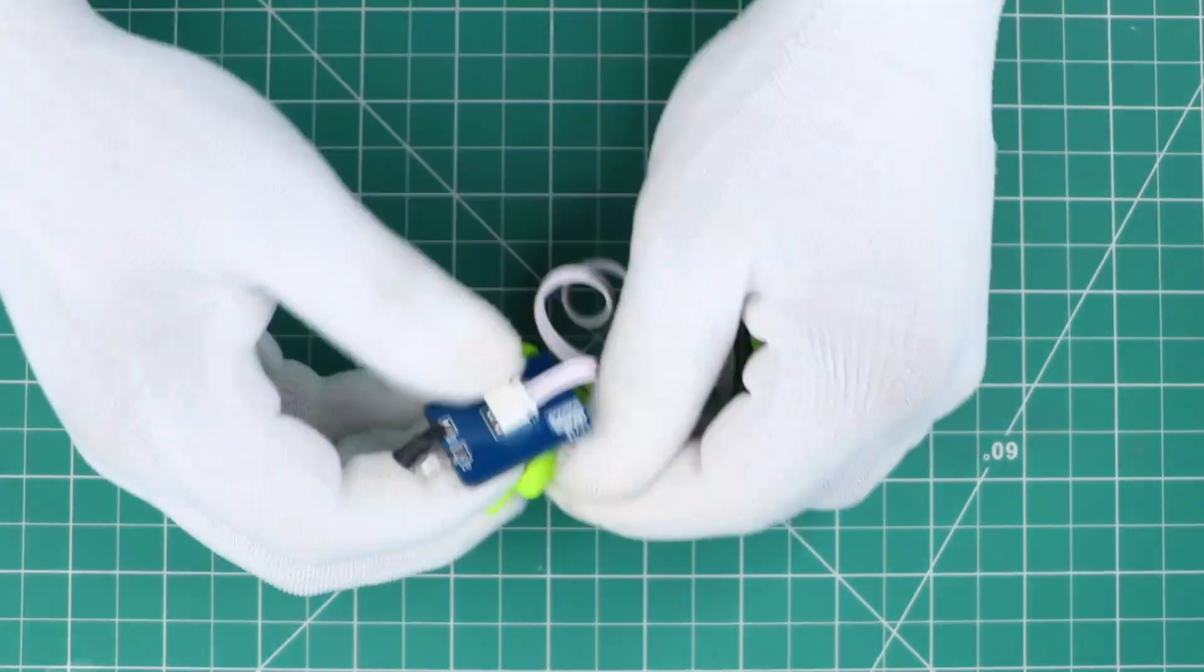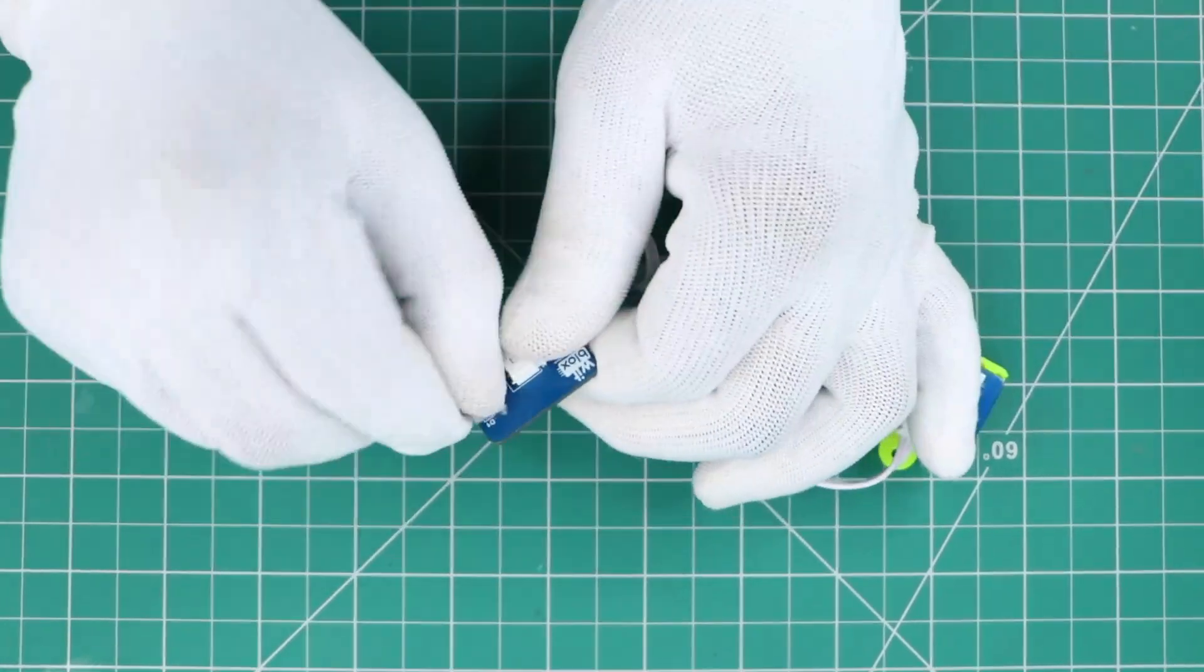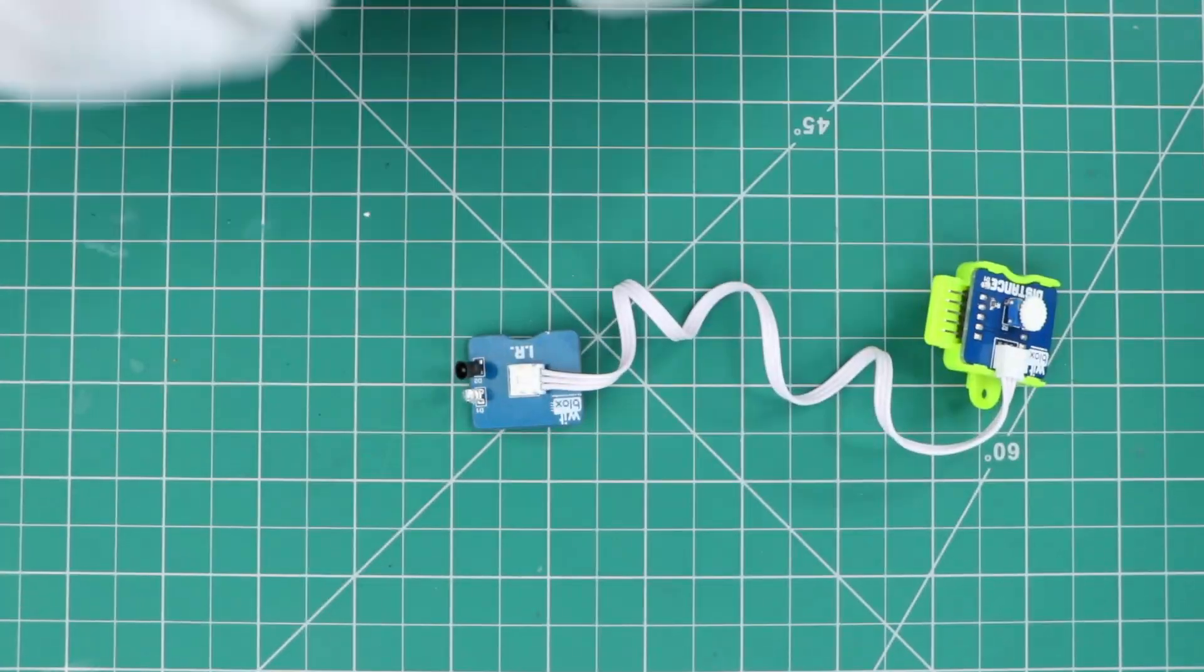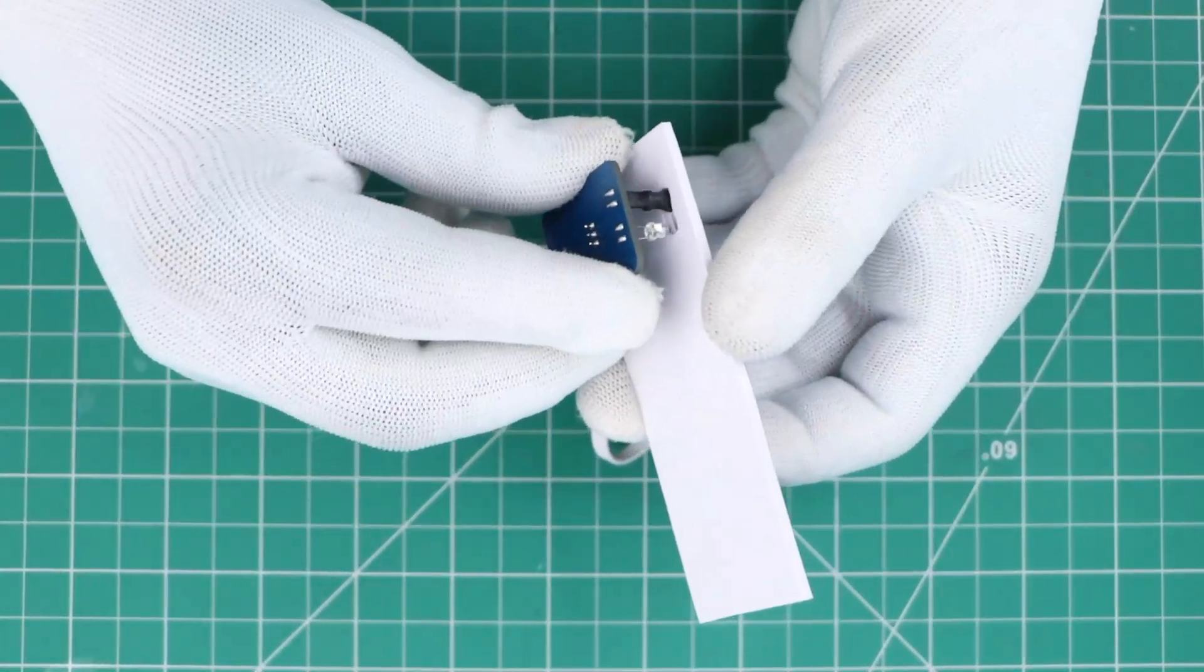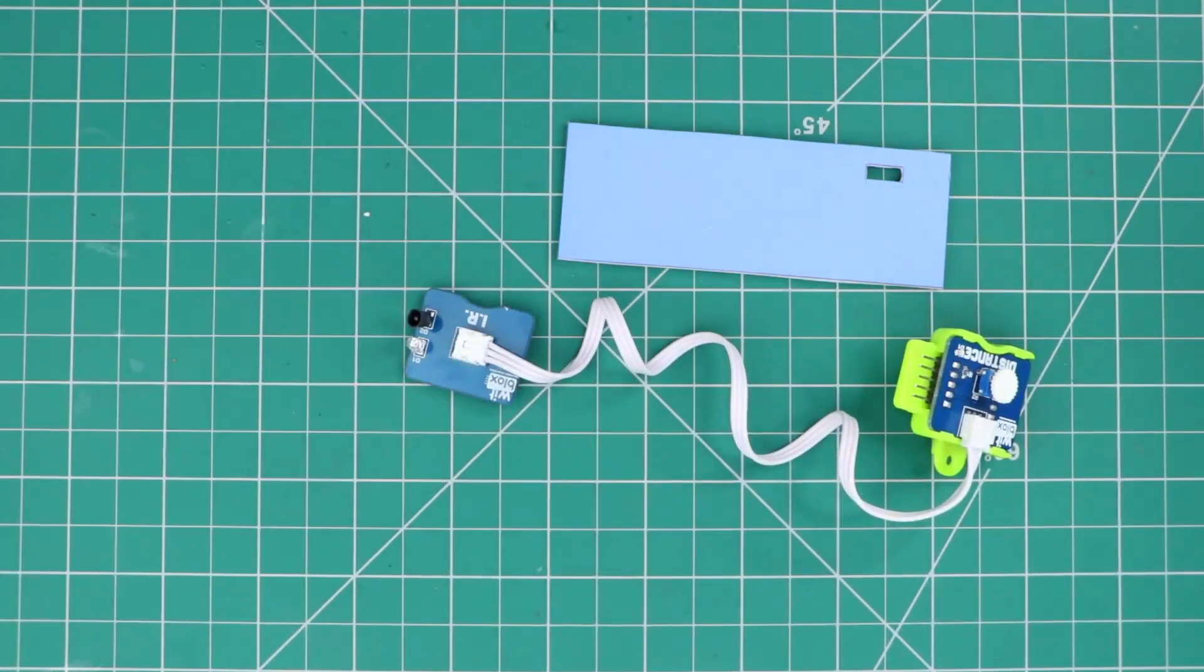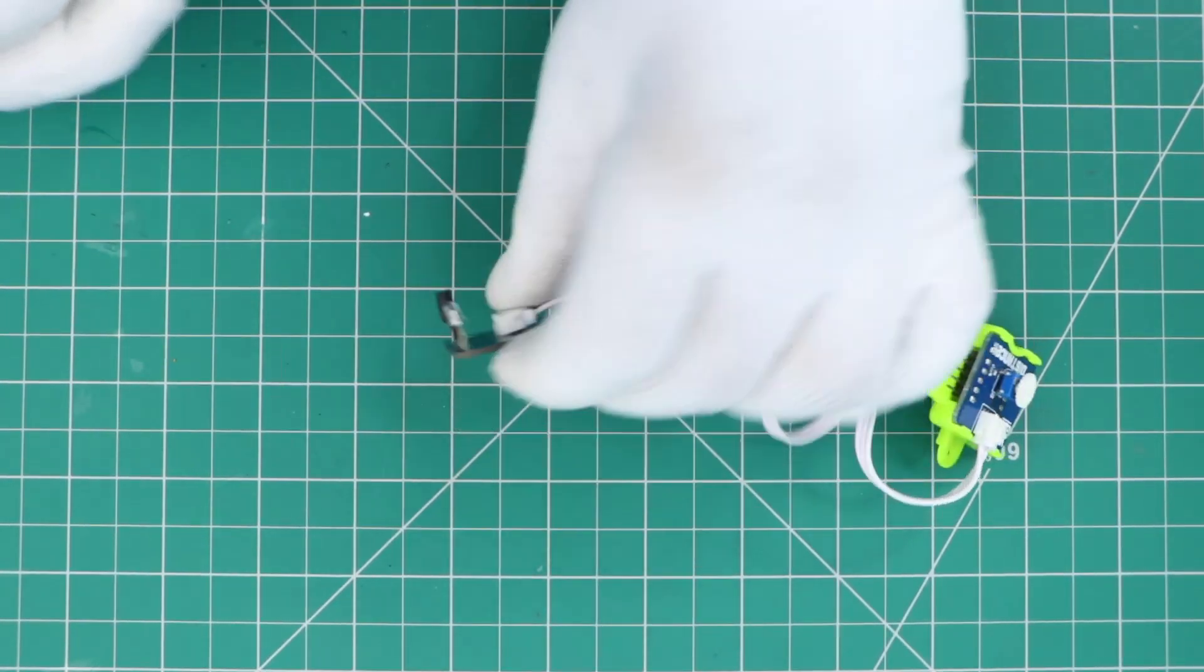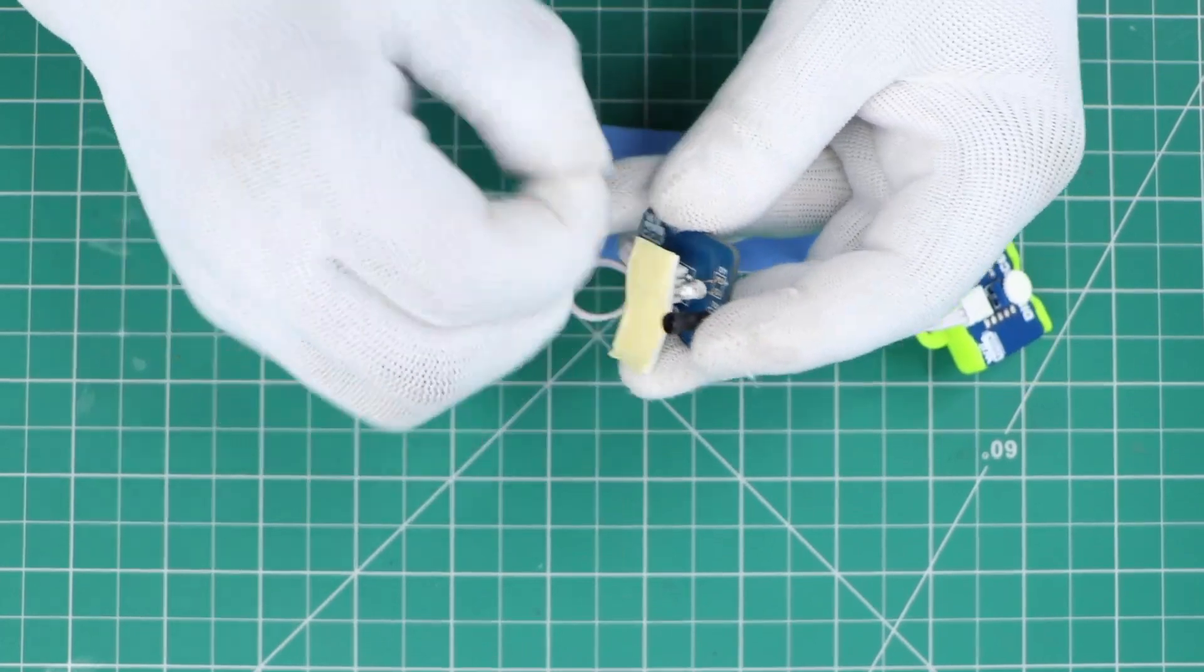Remove the shell. This will reduce the weight of the blocks. Now bend it in upward direction. Let's stick it. Make a thick layer of double sided tape.